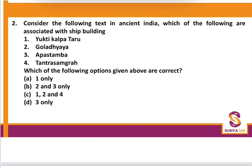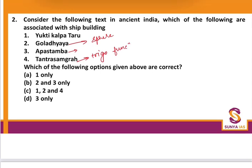Next question: Consider the following texts in ancient India — which are associated with ship building? The answer is Yukti Kalp Taru, because Gola Dhyay is associated with the study of spheres; Apasthambh involves concepts of practical geometry; and Tantra Sangre, written by Neelkand Som Suttwan, is related to trigonometric functions. So only option 1 is correct.